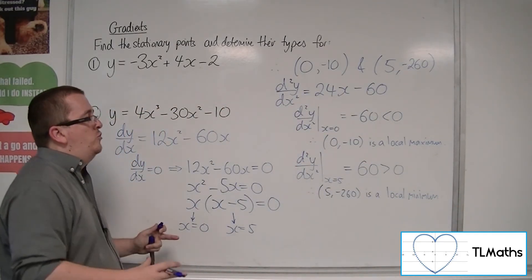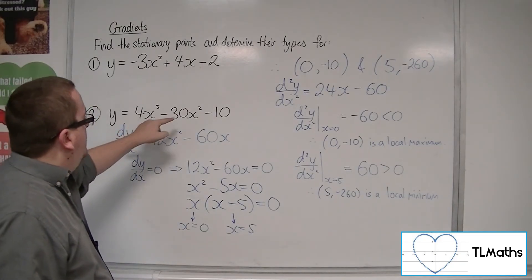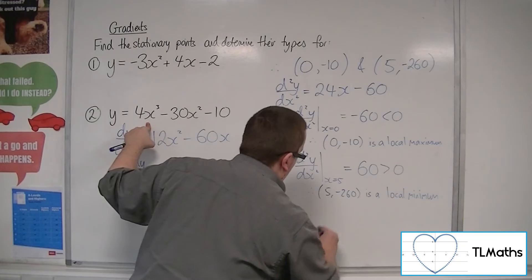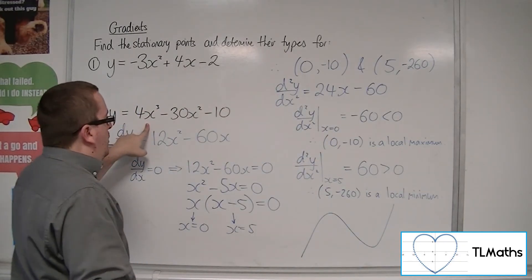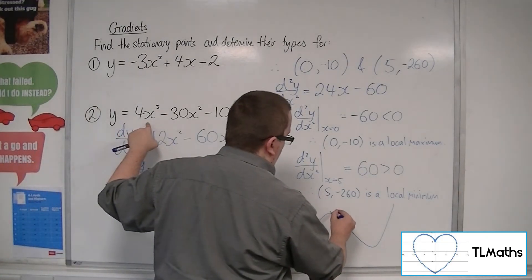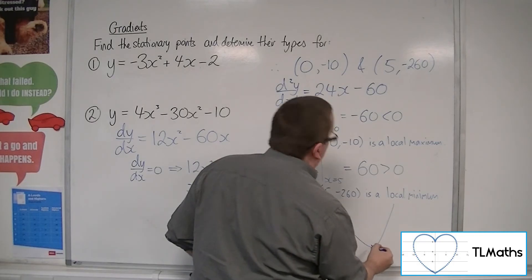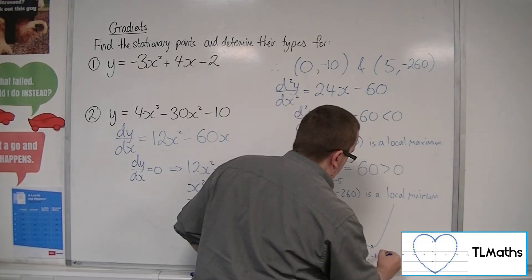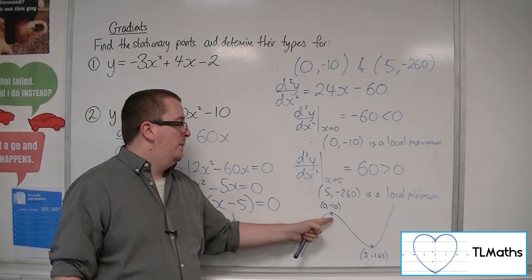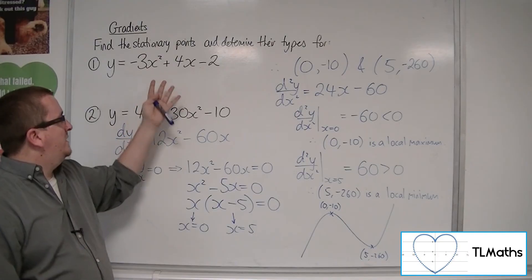So we've found the two stationary points. We've identified what they are. Now, this makes sense because here, because we've got two stationary points, we have a cubic with a positive x cubed. And so the curve must look something like that, to have two stationary points. And start at the bottom left, because it's a positive x cubed. So this one is the 0 minus 10, and then, this one is the 5 minus 260. So it confirms that that one had to have been a local maximum, and that one had to be a local minimum. So that's how we can do it for a quadratic and a cubic.